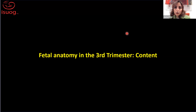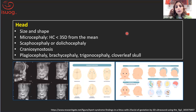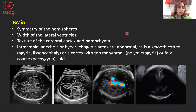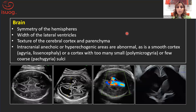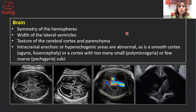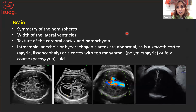If we perform fetal anatomy assessment in the third trimester, what should we look at? Going systematically from the head: look at the size and shape, because microcephaly is diagnosed when the head circumference is below three standard deviations from the mean, and also the shape — craniosynostosis is often diagnosed in the third trimester. For the brain, look at hemispheric symmetry, the ventricles for ventriculomegaly, the texture of the cortex and parenchyma — you should not expect intracranial anechoic or echogenic areas — and look for lissencephaly, polymicrogyria, agyria, or destructive lesions.